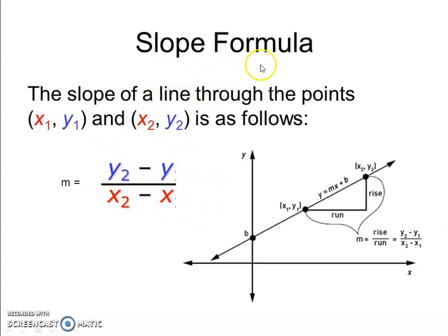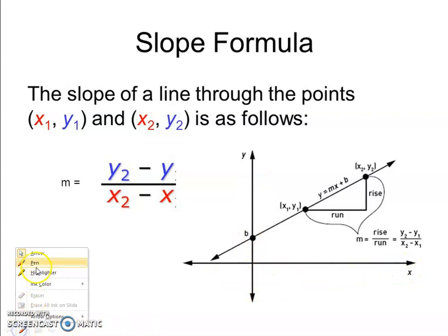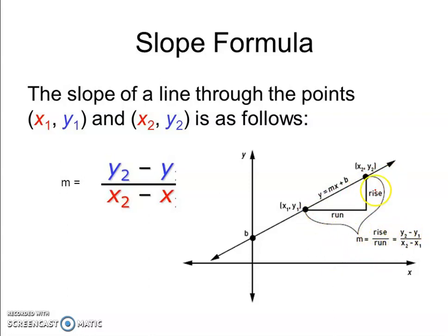Now, to revise the slope formula: the slope of a line passing through points (x1, y1) and (x2, y2) is as follows. In this diagram, the x-axis is given and we take the y-axis. A line y equal to mx plus b intersects between two points. The difference — that is, slope — between these points is given by rise upon run, meaning y2 minus y1 upon x2 minus x1. So, for the equation of line y equal to mx plus b intersecting at (x1, y1) and (x2, y2), m equal to y2 minus y1 upon x2 minus x1.